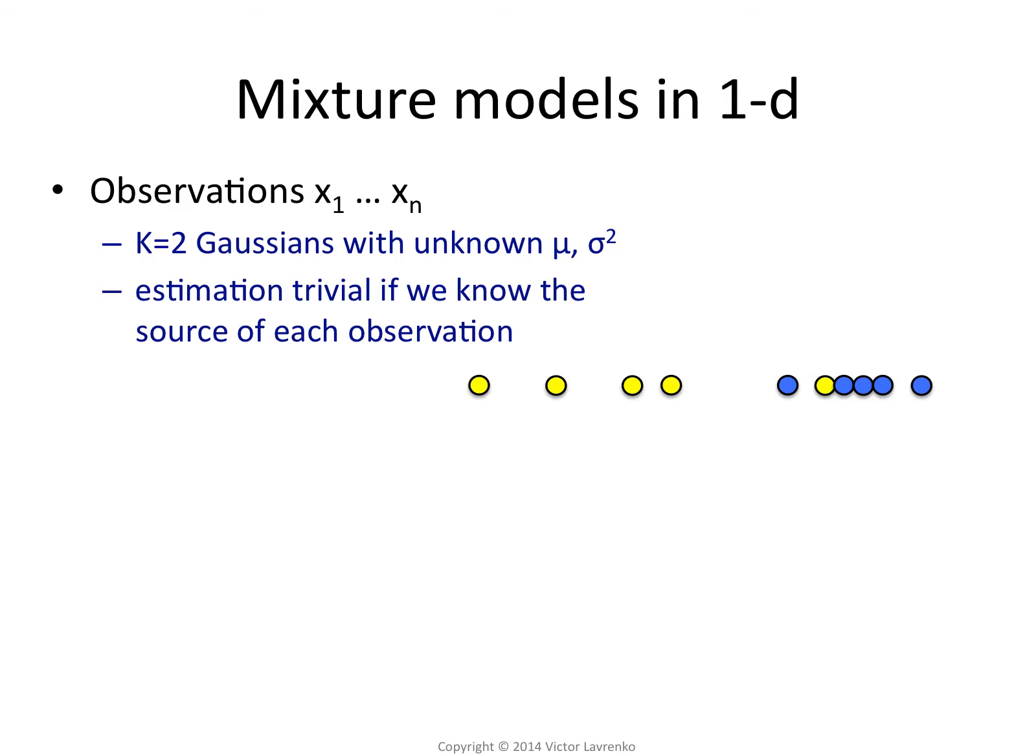Now, if I knew which point came from which Gaussian, estimation would be trivial. So if these were my points thrown on the x-axis and I knew that these points are yellow and those points are blue...